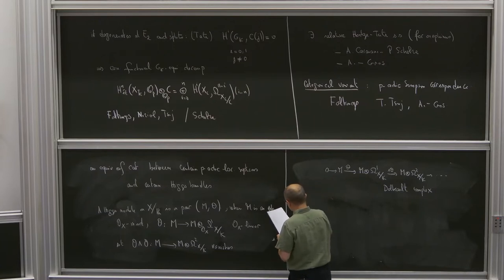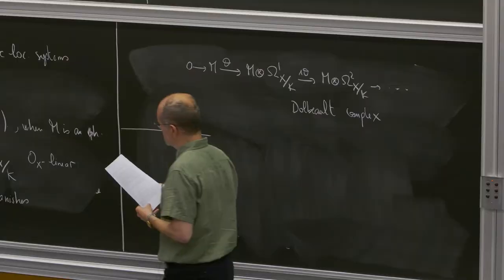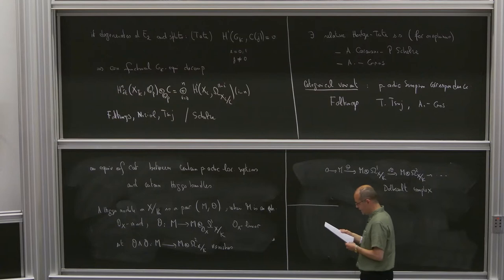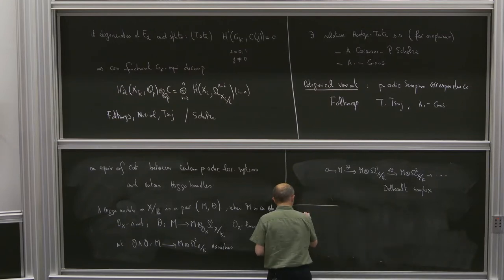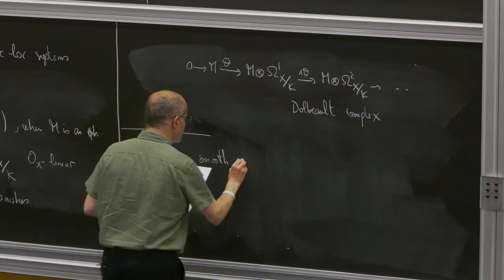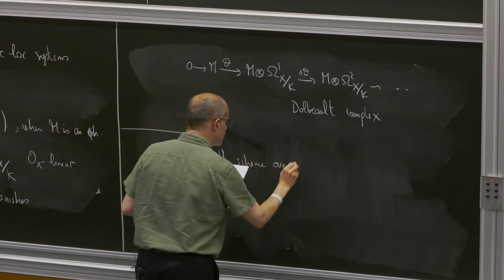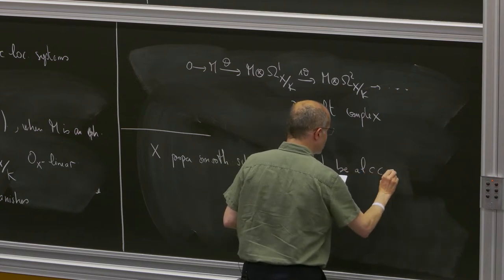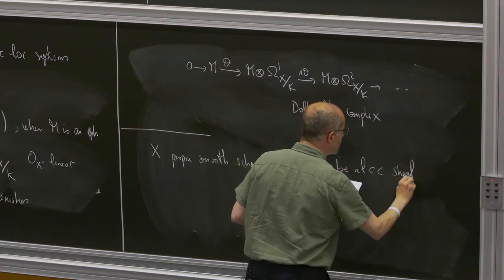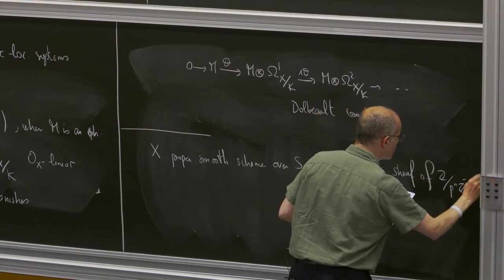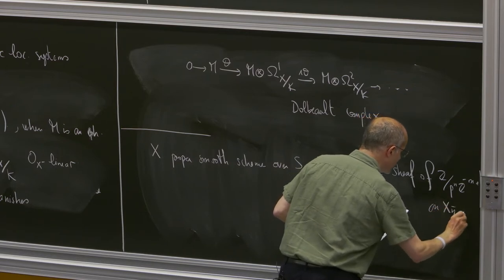The Piyadik-Simpson correspondence produces an equivalence of categories between certain p-adic local systems on X and certain Higgs bundles. Moreover, for a pair of associated objects we have a canonical spectral sequence whose initial term is the Higgs cohomology (the cohomology of the Dolbeault complex) and whose abutment is the cohomology of the local system, which generalizes the Hodge-Tate spectral sequence.